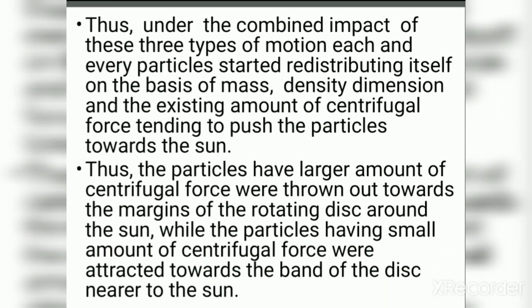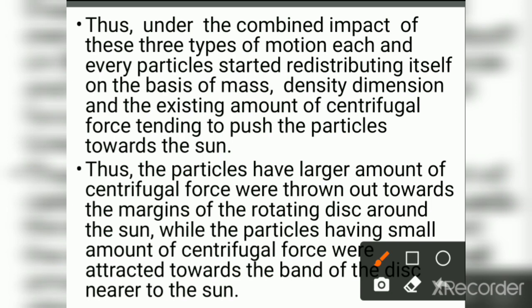Under the impact of these three types of motion, each particle started redistributing itself on the basis of mass, density, dimension, and the existing amount of centrifugal force. Particles with a larger amount of centrifugal force were thrown out towards the margins of the rotating disk, while particles having a small amount of centrifugal force were attracted towards the band of the disk nearer the Sun.